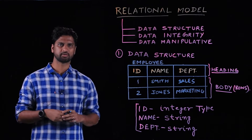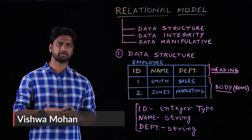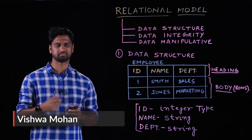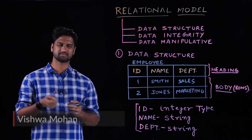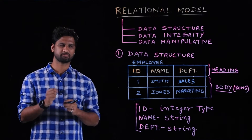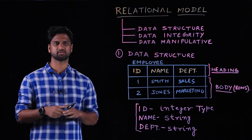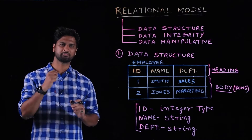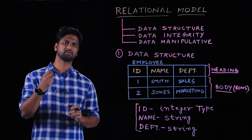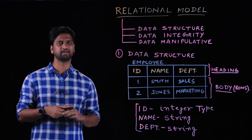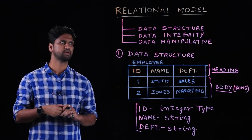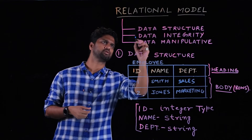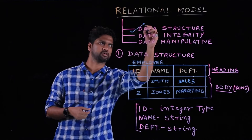We have been discussing the different features of the relational database management system and discussed in detail about the different intricacies. The next thing we want to discuss is the different relational models that we follow in any RDBMS. There are three kinds of relational model. The first is the data structure.